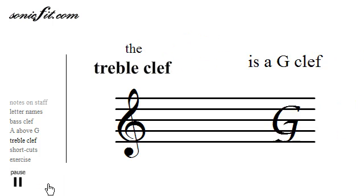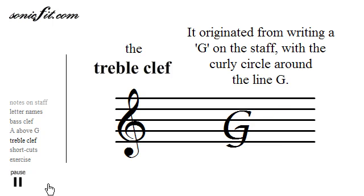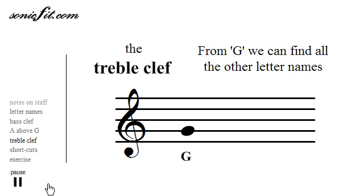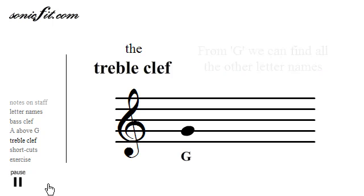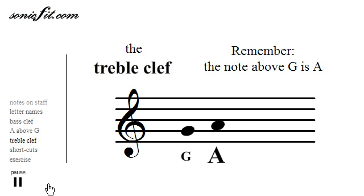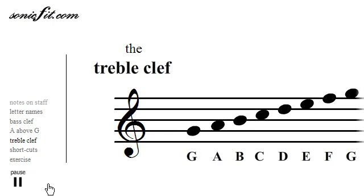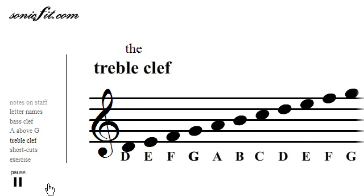The treble clef, used for higher notes, originated by placing a G on the staff with the curly circle around the line G. As with the bass clef, once you know one note, you can find the rest. Remember, one note higher than G is A, and then alternating lines and spaces, you can go up or down to find the alphabet letters of the notes.